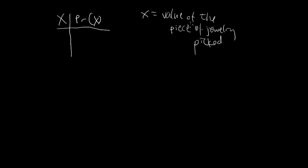This is an expected value problem, and since it's not Bernoulli, we're going to have to use a regular table. Here, x is the value of the piece of jewelry picked. So x can take two values: it's either 40 or 2500.